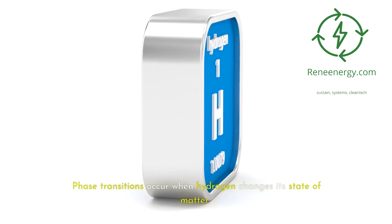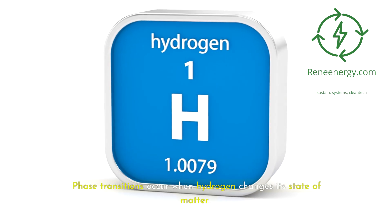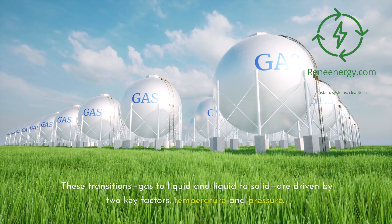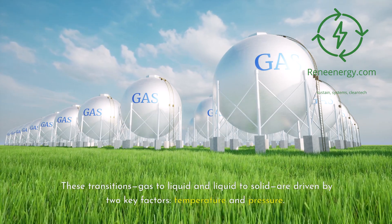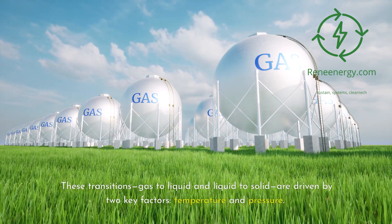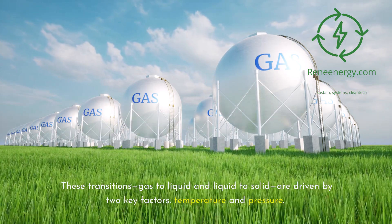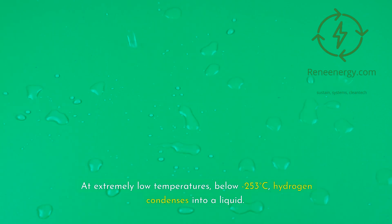Phase transitions occur when hydrogen changes its state of matter. These transitions — gas to liquid and liquid to solid — are driven by two key factors: temperature and pressure. At extremely low temperatures, below minus 253 degrees Celsius, hydrogen condenses into a liquid.